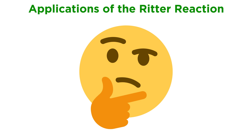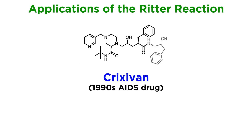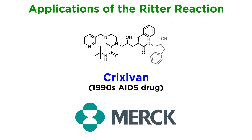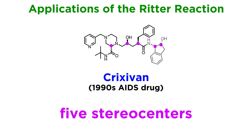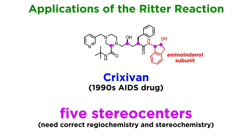Let's examine a few examples that just scratch the surface of the potential this reaction may have. The drug Crixivan, introduced by Merck, was one of the first effective drugs against AIDS, and in the 1990s it attracted a huge amount of attention. Its structure is quite complex, and organic chemists were facing a tremendous challenge in trying to prepare ton amounts of the drug. The molecule contains five stereogenic centers, two of them located in what was called the aminoindenol subunit, highlighted here in red. Therefore, one of the key problems was figuring out how to prepare this subunit in high regiochemical and stereochemical purity.